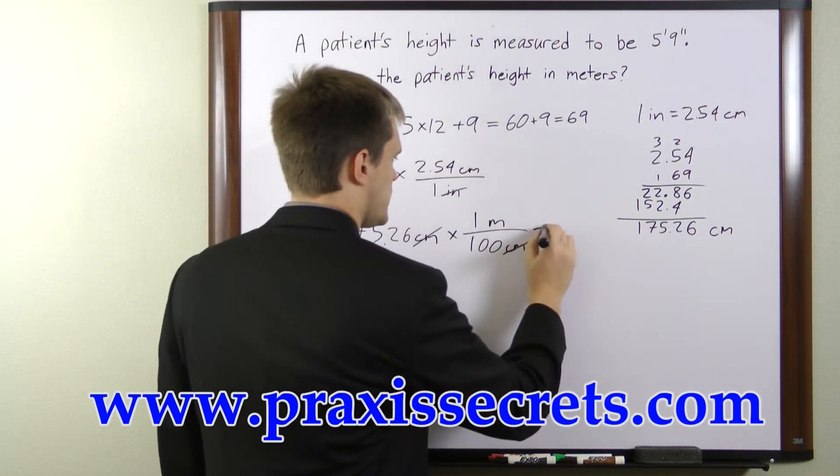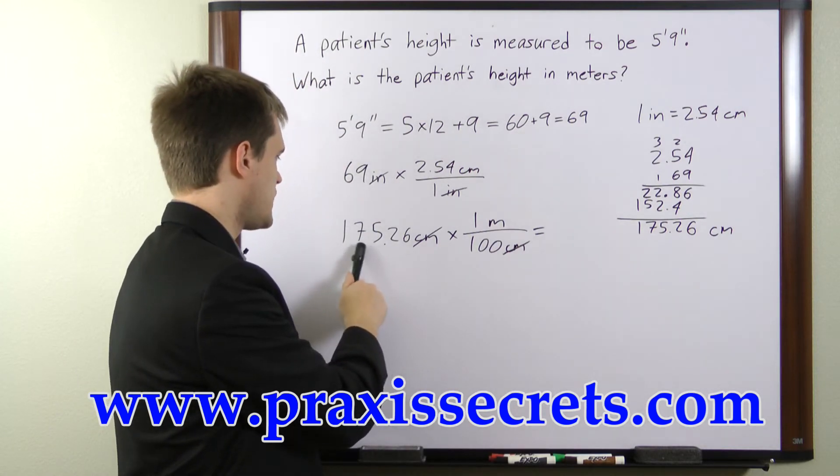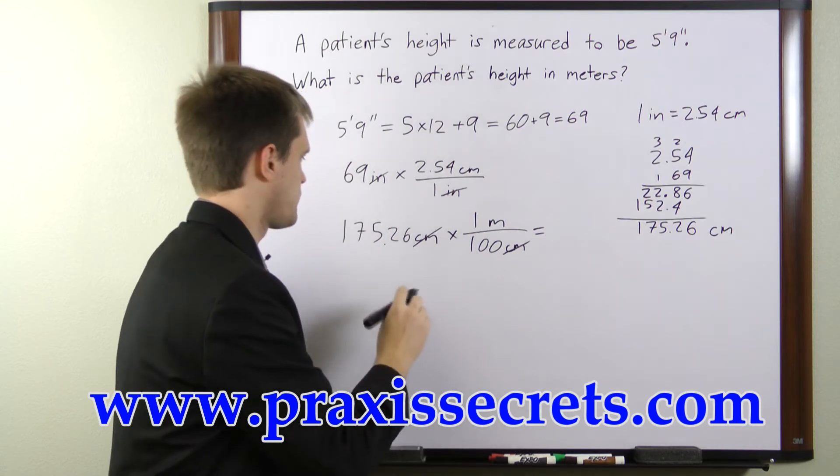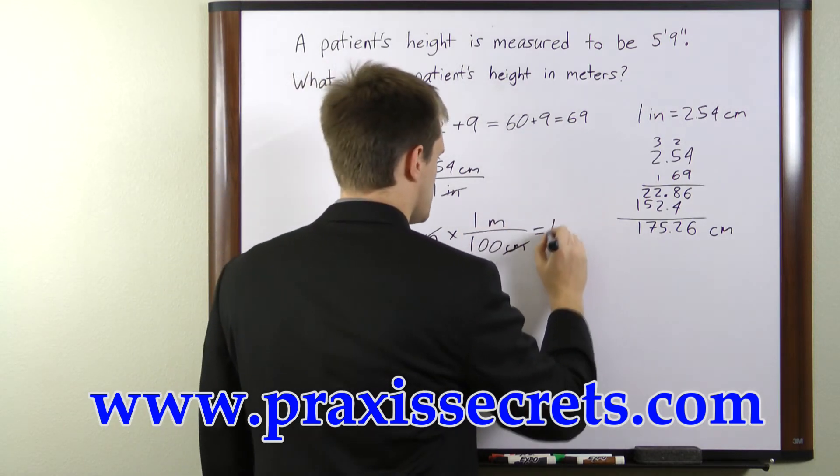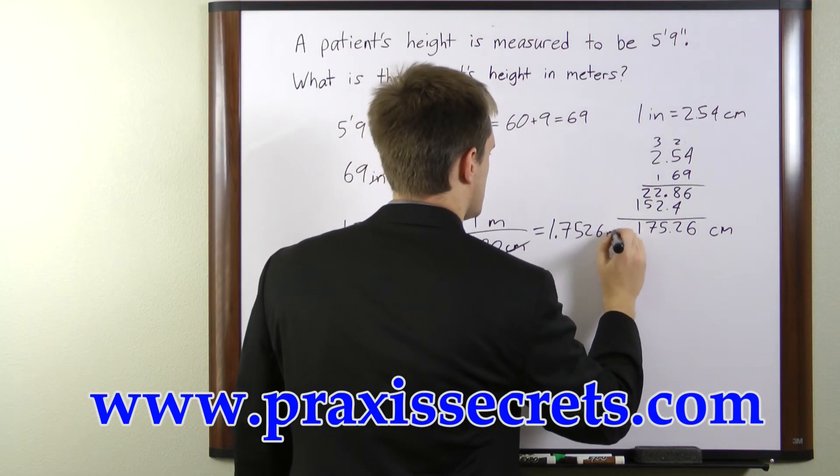So to divide by 100 all we're going to do is move our decimal point two places to the left because there are two zeros. So this is going to be equal to 1.7526 meters.